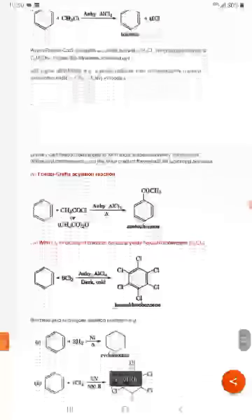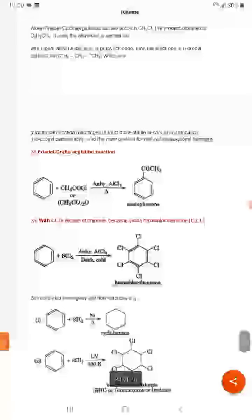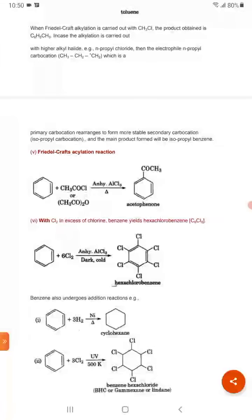Now next Friedel-Crafts acylation reaction. In Friedel-Crafts acylation reaction benzene is reacted with acetyl chloride and the general formula of acetyl chloride is RCOCl or in presence of acetic anhydride. It will give acetophenone.